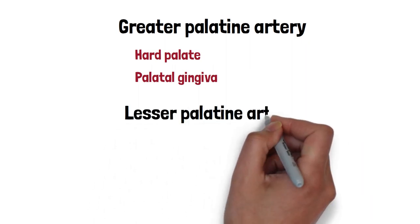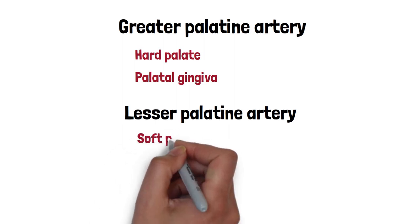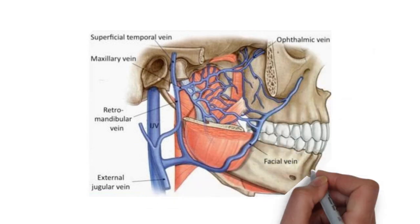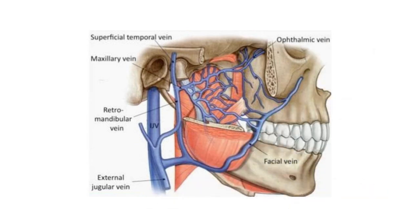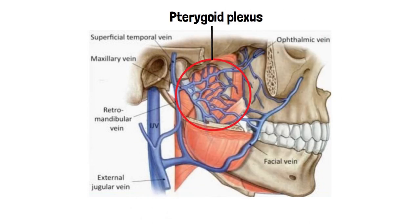The lesser palatine artery passes through the lesser palatine foramen and also contributes to the vascular supply of the soft palate. The veins of the palate follow a similar path as the arteries and drain into the pterygoid plexus of veins in the infratemporal fossa, or into the network of veins associated with the palatine tonsil, which then drain into the pterygoid plexus or directly into the facial vein.